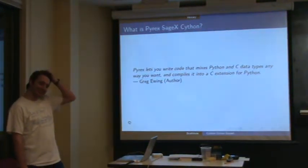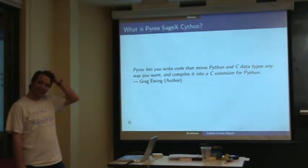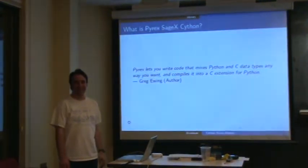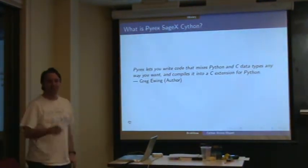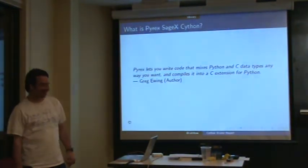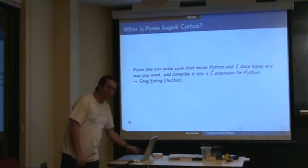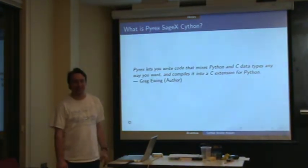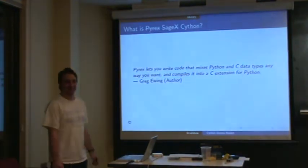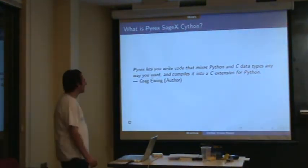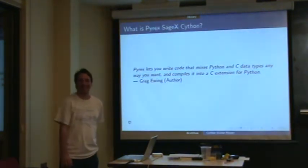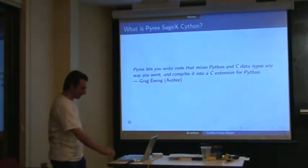I never thought of that. Maybe the version that comes in Sage could be called Scython. The thing is, you don't have to have a Sage version. The only other person who is 'Scython' is a punk rocker in England, but we now have the number one hit at Google.